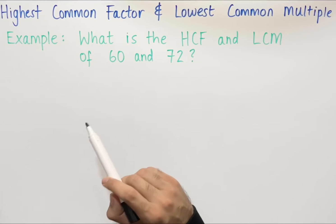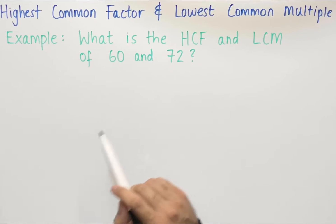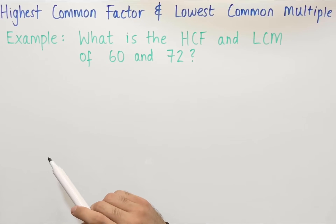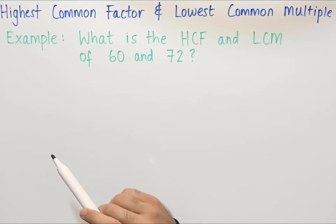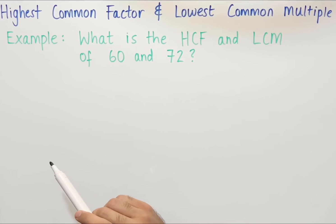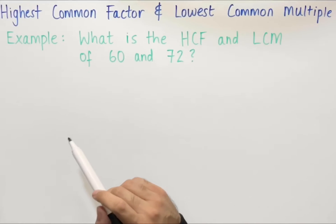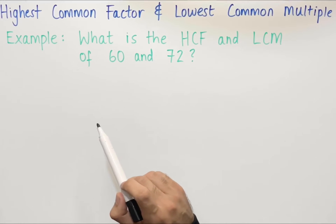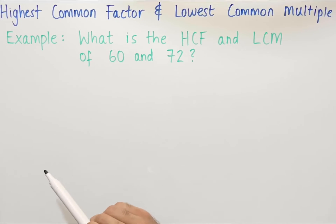The way we go about answering this question is we use a factor tree to first write both numbers as a product of their prime factors.